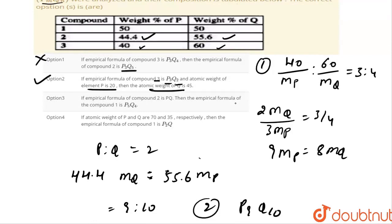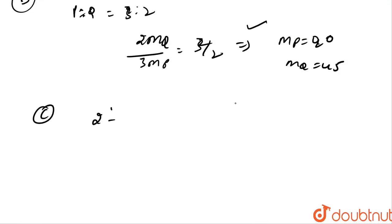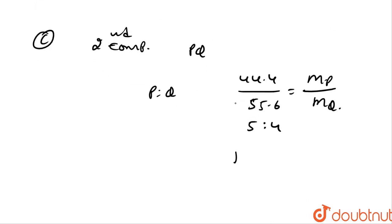Coming to option C. They state that the empirical formula of compound 2 is PQ and the empirical formula of compound 1 is P5Q4. For compound 2, the empirical formula PQ means P is to Q equals 44.4 divided by 55.6, which simplifies to MP by MQ giving 5 is to 4. So the empirical formula of compound 1 becomes P5Q4. This is correct, so option C is also a correct statement.